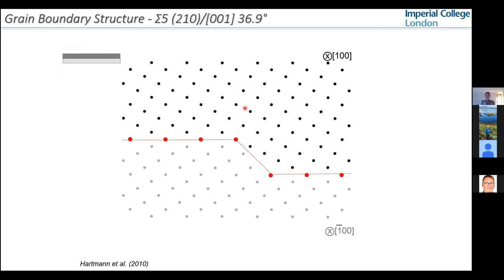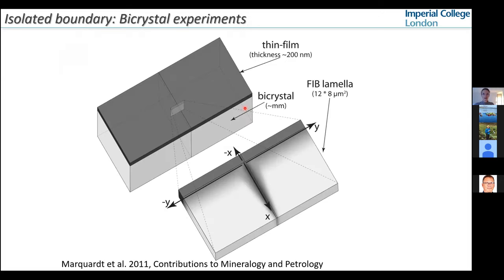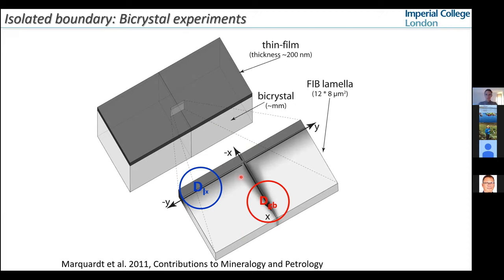Let's have a closer look at transport along one specific interface, starting with an isolated grain boundary model for diffusion. In such a situation with two crystals and a grain boundary in between, you have several elementary processes occurring simultaneously: volume diffusion from the crystal surface into the sink crystal in the x-direction, diffusion along the grain boundary which is usually fast, leakage flux from the grain boundary into the crystal lattice, and potentially surface diffusion, which makes the whole process more complex.